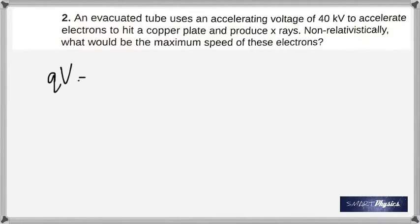What is the potential energy? It is q times the voltage, which becomes equal to its kinetic energy, which is one-half times the mass times velocity squared. Since you're asked to find the velocity, make that the subject and you get square root 2.